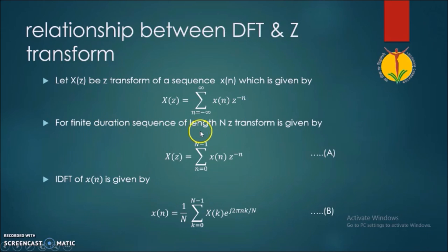For the finite duration sequence of length N, the Z transform is given by X(Z) equals summation from n equals 0 up to N minus 1 of X(n) into Z raised to minus n.